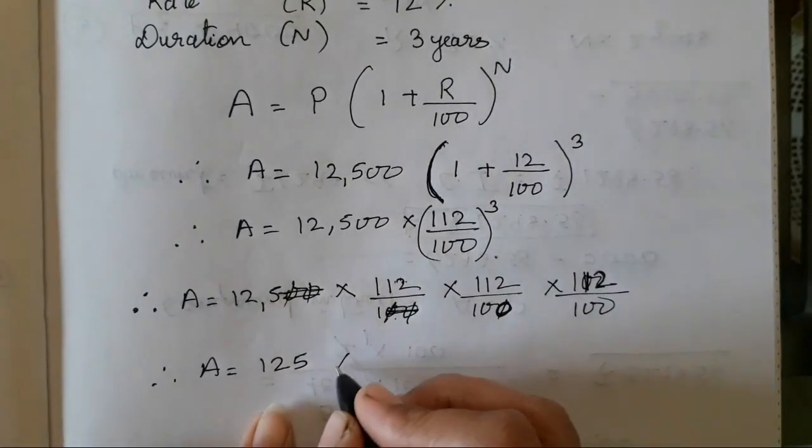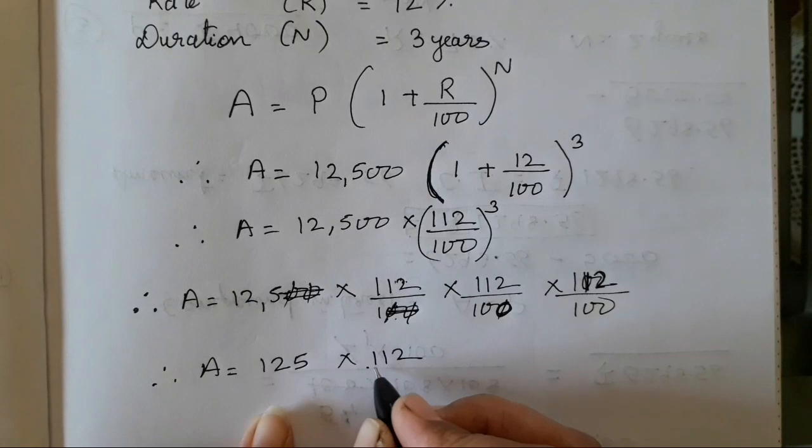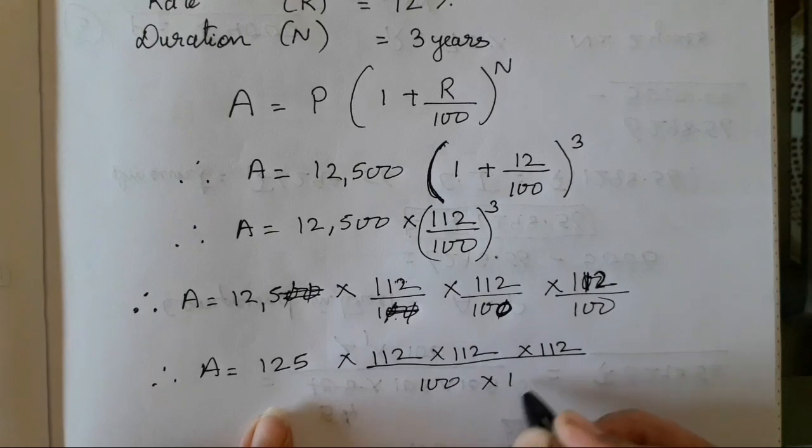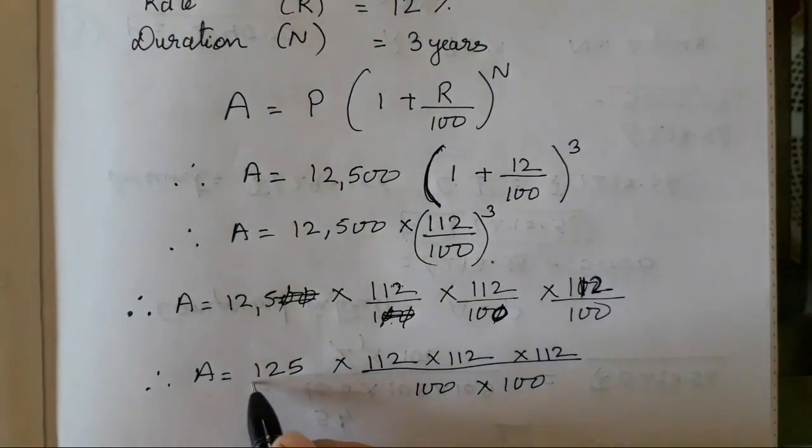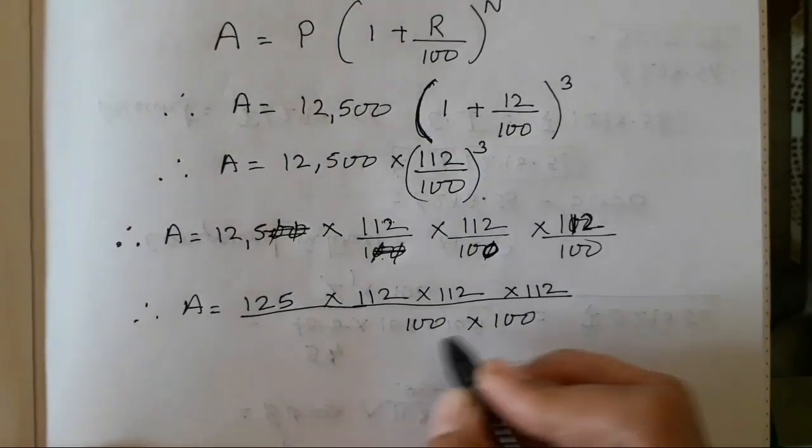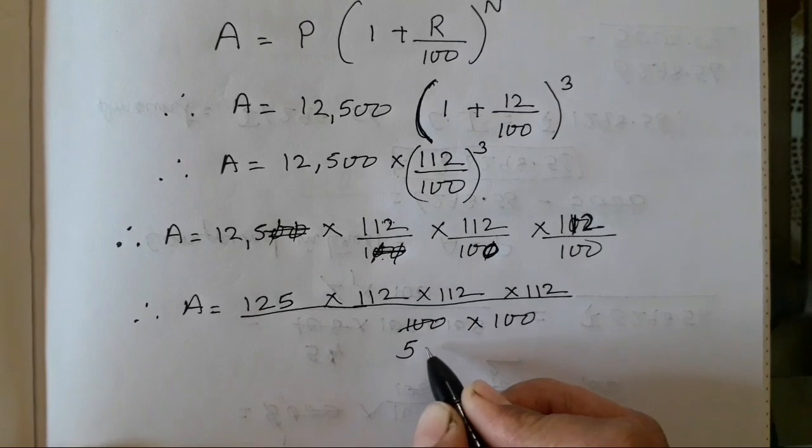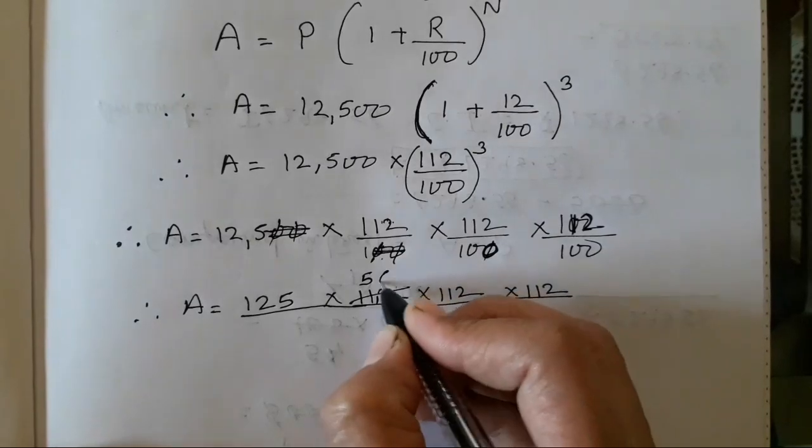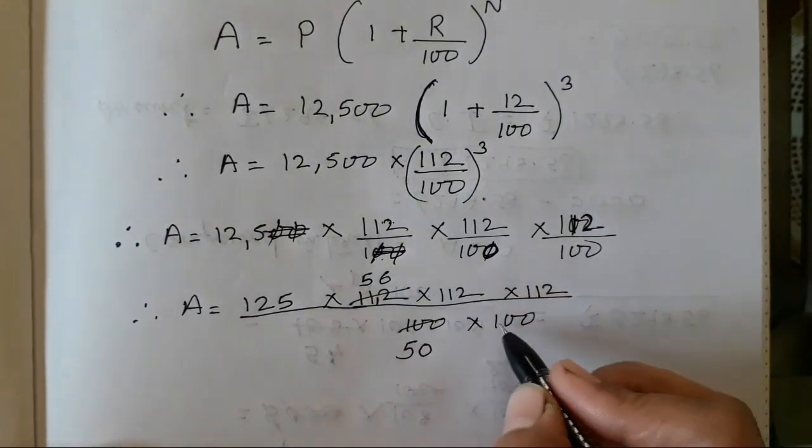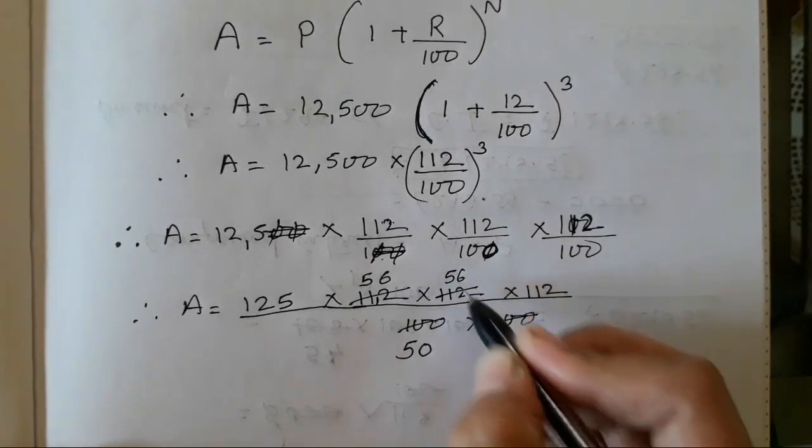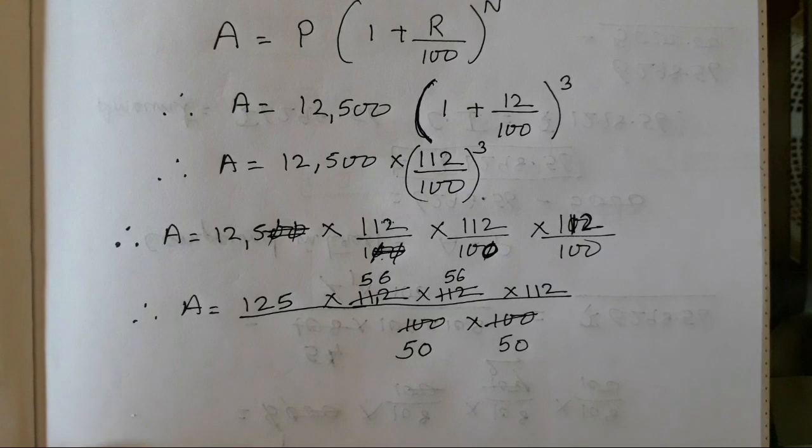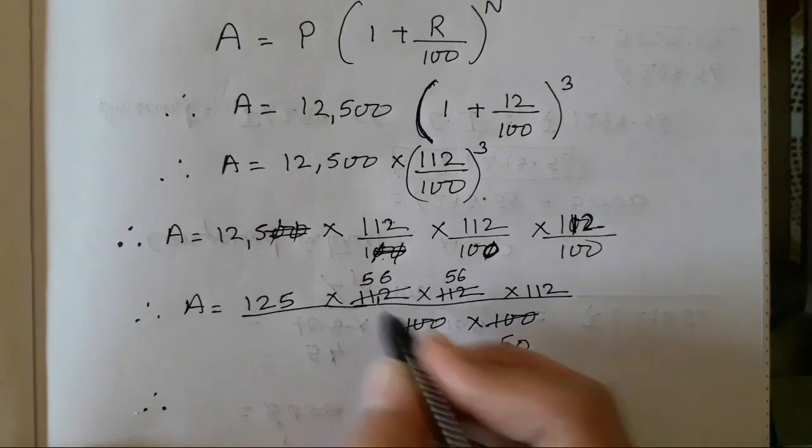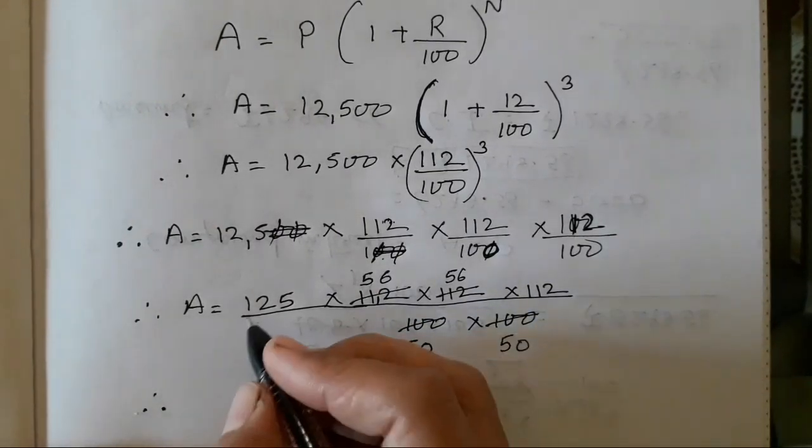Now over here only 125 is remaining into 112, there is nothing over here. We will take this 100 into 100. We can reduce it now with the table of 2. 2 fives are 10, 0 as it is, 2 fives are 10, again 1, 2 sixes are 12. Again we will reduce this, the same answer will come, that is 50 and over here 56. Same number so we don't have to take much efforts to solve this.